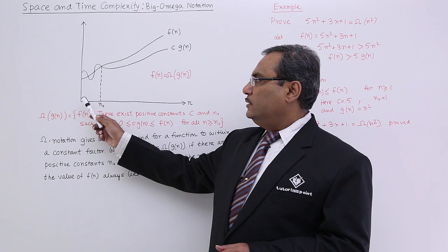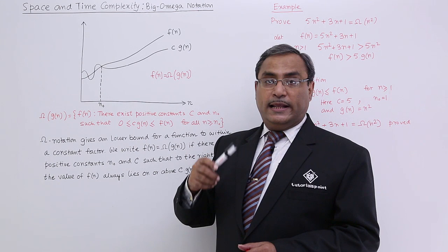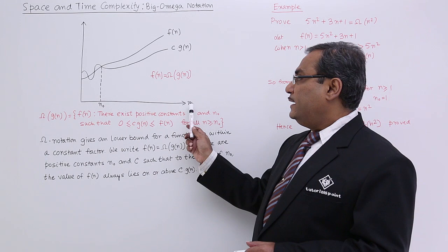When the value of n is n0 or lesser than that, when the value of n is less than n0, then c into g of n and f of n, you see, they can be greater than or less than or equal to anything was happening there.